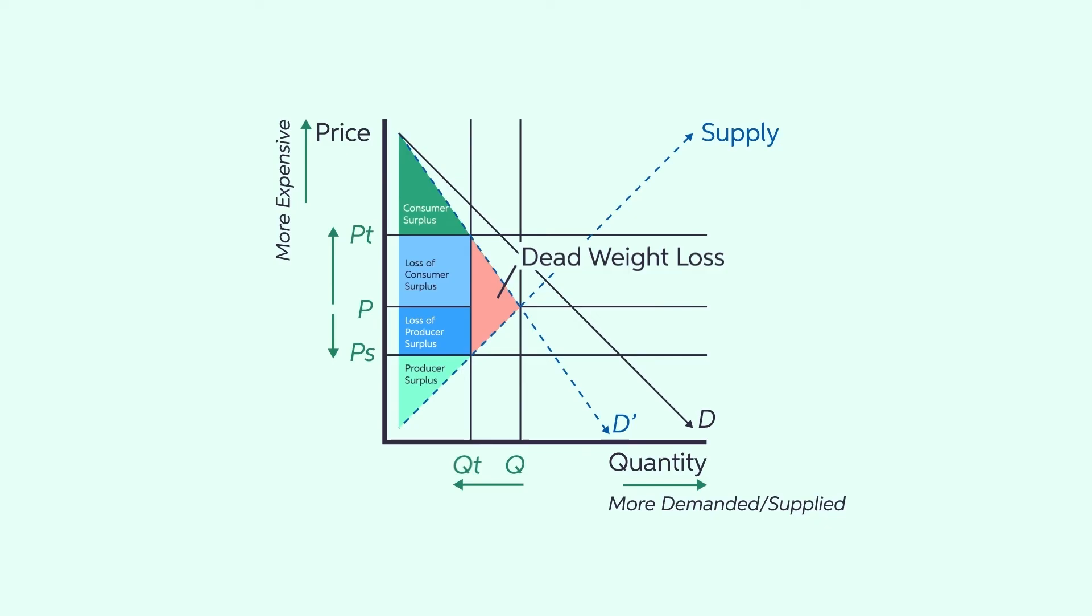In general, whichever side of the demand or supply equilibrium is more inelastic will bear more of the cost associated with the tax.